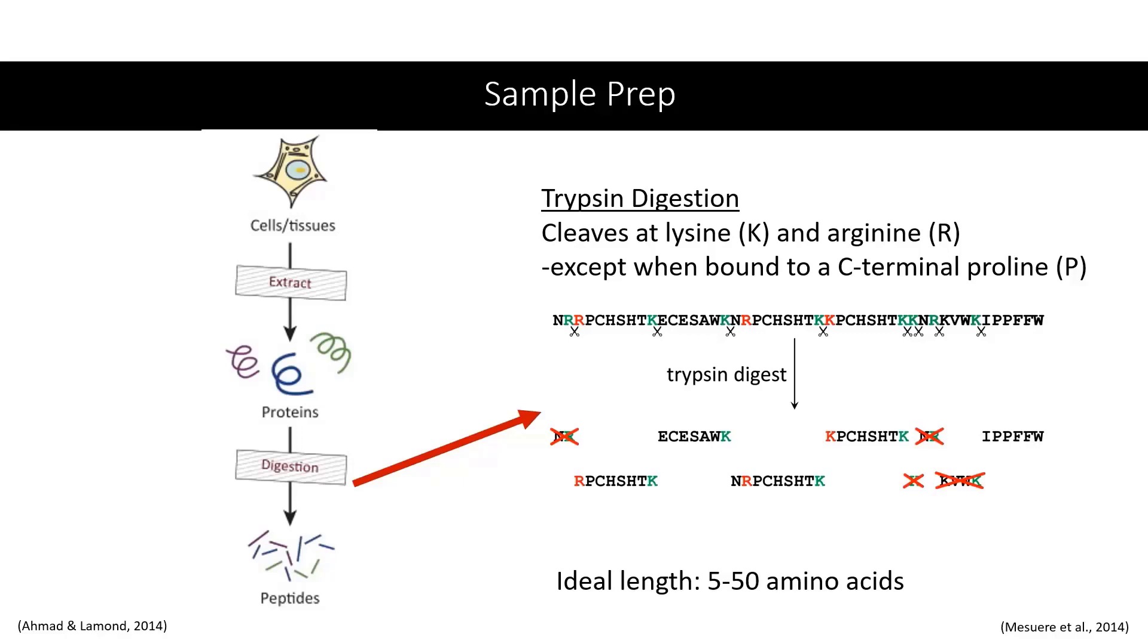The most common digestion performed is trypsin digestion, which cleaves protein molecules after a lysine or arginine amino acid, except when bound to a C-terminal proline. Now, that may seem a little confusing, so let's take a look at the sequence shown here. Each letter is the shorthand code for an amino acid, so you should see this string of letters as a string of amino acids.